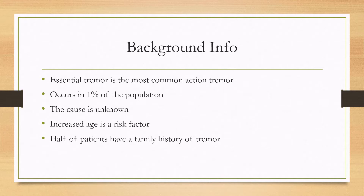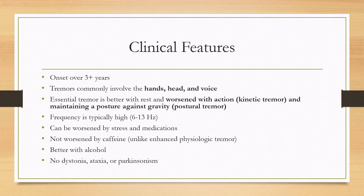Increased age is a risk factor for developing the disease, especially age above 60. One notable feature in people with essential tremor is that there tends to be a strong family history — about half of patients will have a family history of tremor.